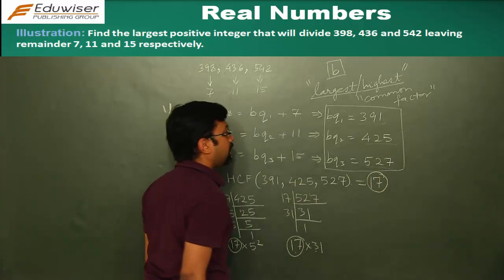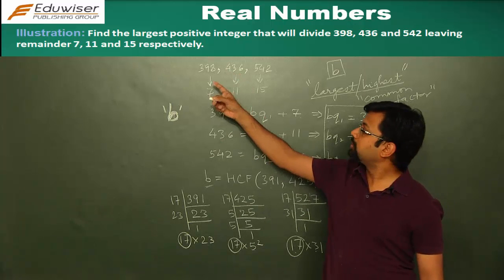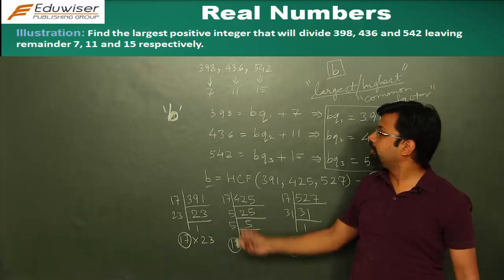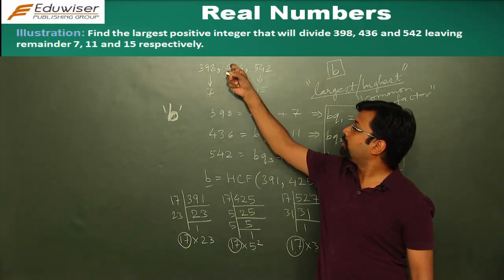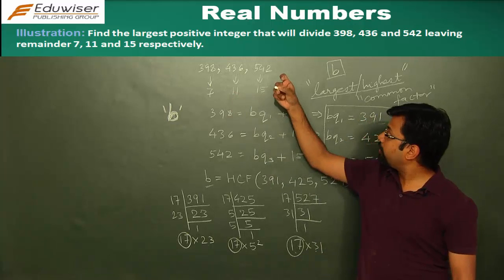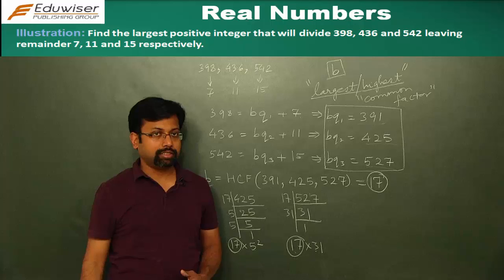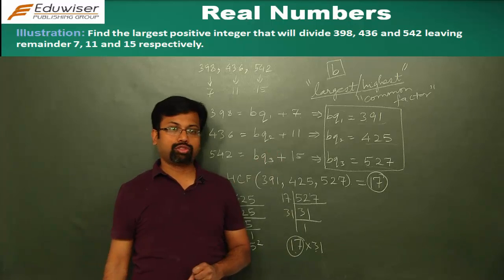So 17 is the largest number which will behave this way. When 398 is divided by 17, you should get a remainder 7. When 436 is divided by 17, you should get a remainder 11. And when 542 is divided by 17, you should get a remainder 15. So this is how you approach this question.